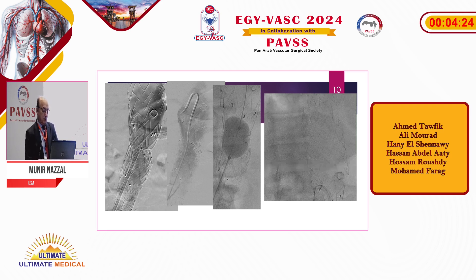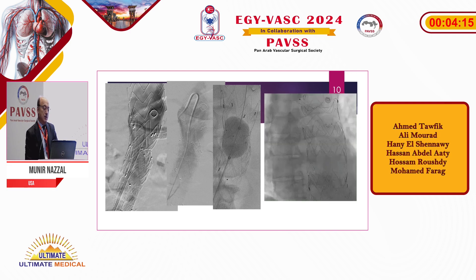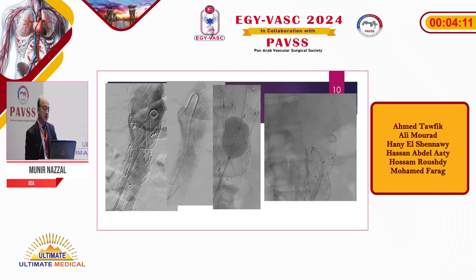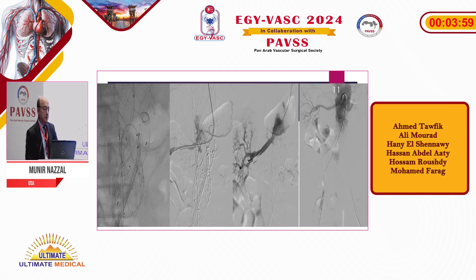This is what we did in the end. We used the Aptas to go around the metal part, as you can see. We pulled it down, snared the wire as you can see here, and pulled the stent down on that side. After that, we went in from the arm and managed to get into the right renal artery and finalized the procedure.